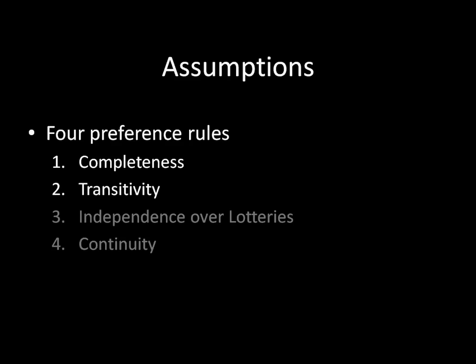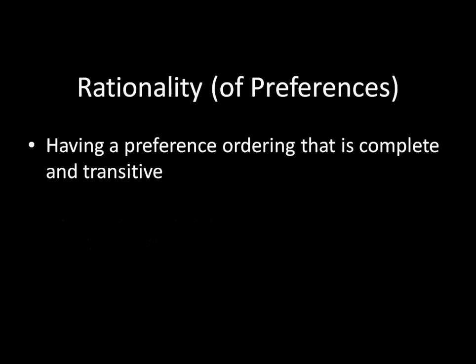We've covered the first two of these — Completeness and Transitivity — and what I'm going to be talking about in this lecture is what completeness and transitivity combined buy us, whether or not an individual's preferences follow independence over lotteries and continuity. So we're ignoring independence over lotteries and continuity, which is convenient because we haven't learned about them anyway, and we're talking about what completeness and transitivity combined and alone buy us. And more specifically, as you might imagine, it buys us rationality, the subject of this lecture.